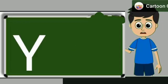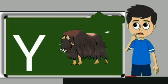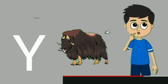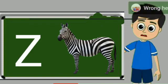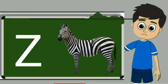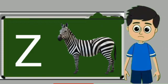Y for yak. Yak means bell. Z for zebra. Zebra means zebra.